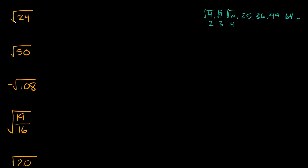So if you want to break something down like the square root of 24, you want to try and include a perfect square. The number 24 can be broken down different ways: 2 times 12, 3 times 8, or 4 times 6. You want to choose a pair that has a perfect square, so in this case we would break 24 down into 4 times 6, because 4 is a perfect square.